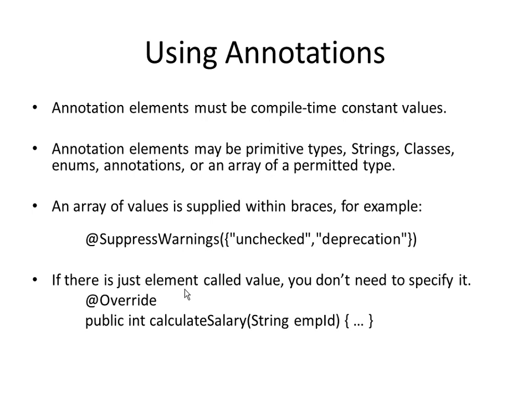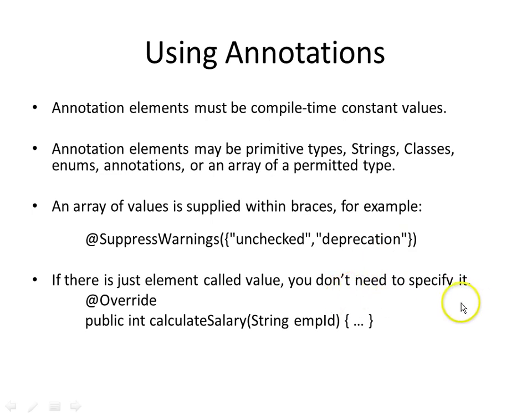Generally you can supply an array of values to an annotation. For example, for @SuppressWarnings you can specify unchecked exceptions or deprecated fields or methods, passing them as an array inside curly braces. If there is just one element called 'value' then you don't need to specify it at all — for example, @Override doesn't need anything passed to it.